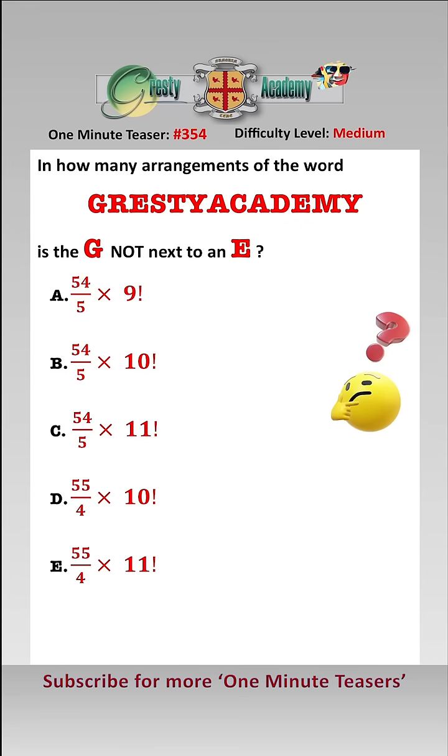We have 13 letters in the word Gresti Academy and there are three duplicates: the A, the Y, and the E. We want to find how many arrangements is the G not next to the E. We're going to use inclusion-exclusion.